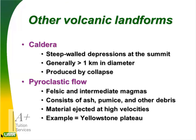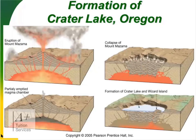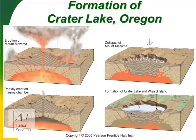Other volcanic landforms: the caldera forms when the crater falls in after a volcanic eruption. Pyroclastic flows consist of felsic and intermediate magma with ash, pumice, and other debris ejected at high velocities — an example is the Yellowstone Plateau. A crater lake forms when an eruption collapses the volcano — over time water fills the collapsed caldera, as seen at Crater Lake in Oregon (formed by the eruption of Mount Mazama). Eventually it could blow off again.